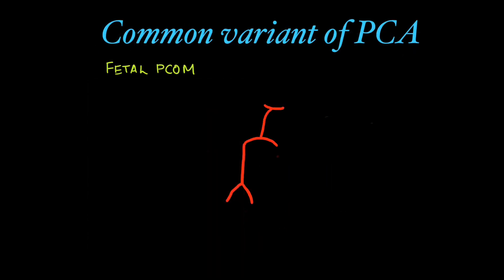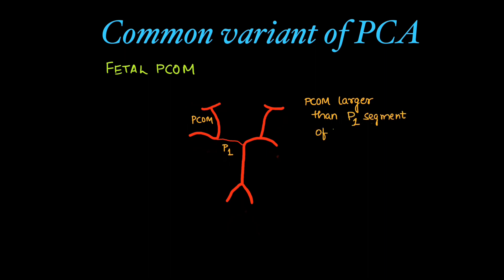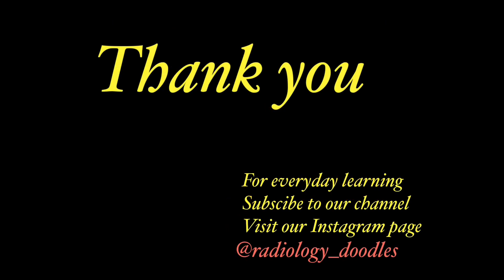The most common variant of the posterior cerebral circulation is the fetal posterior communicating artery, where the posterior communicating artery is larger than the ipsilateral P1 segment and hence supplies a large bulk of blood to the posterior cerebral artery segments. Thank you for listening, and for everyday learning, subscribe to our YouTube channel and Instagram page, Radiology Doodles.